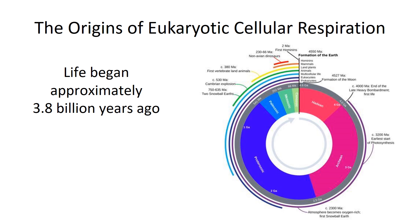The origins of eukaryotic cellular respiration actually has its origins back when life began almost 3.8 billion years ago. As you can see by this wheel of time, life has been around for a very long time on this planet. Life got started 3.8 to 4 billion years ago. Now animals have been around for less than 600 million years. So why is that, and why did it take so long for cellular respiration to begin?